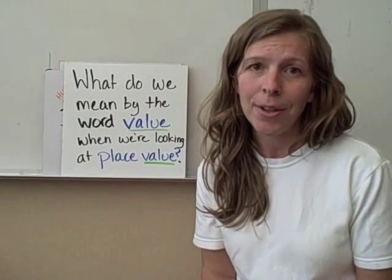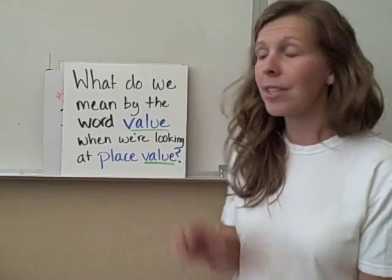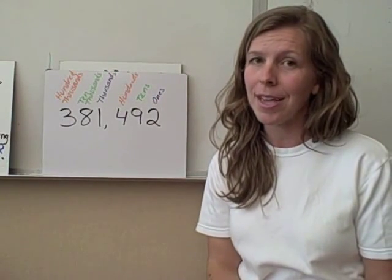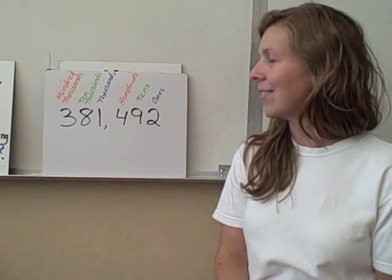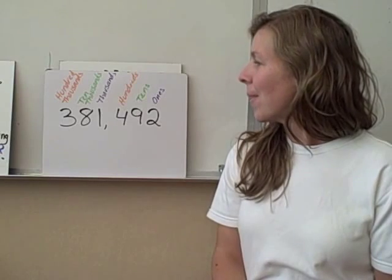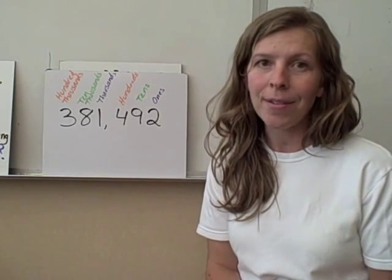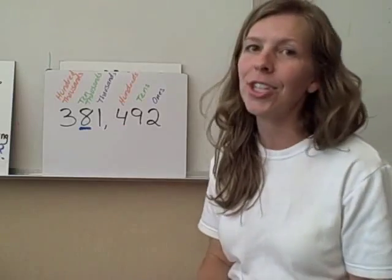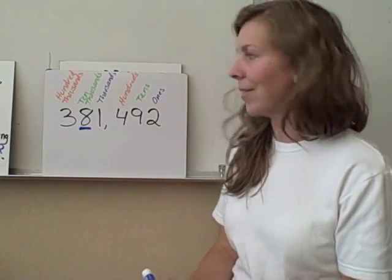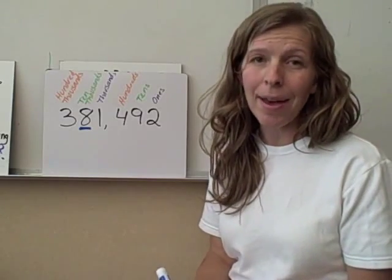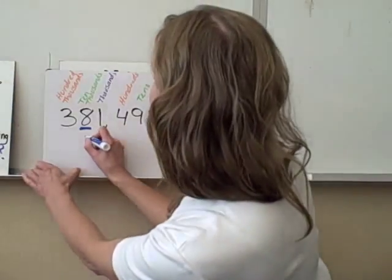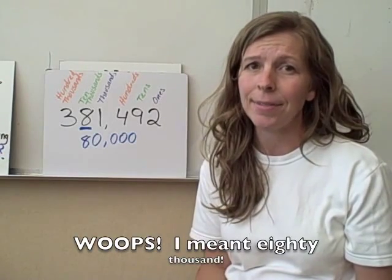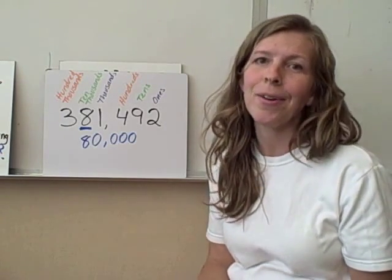What does 'value' mean when we're talking about place value? It essentially means the same thing. Let's look at this number — see if you can say it before I say it: 381,492. If we were to talk about the value of the digit 8 in 381,492, what we're talking about is that the value is 800,000. It's pretty easy, isn't it?